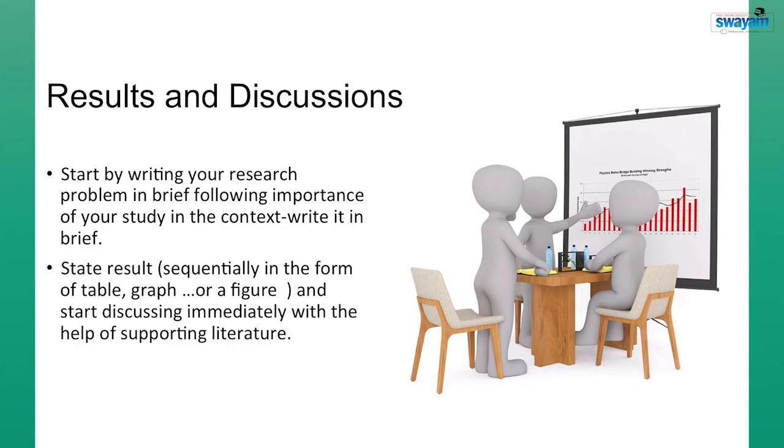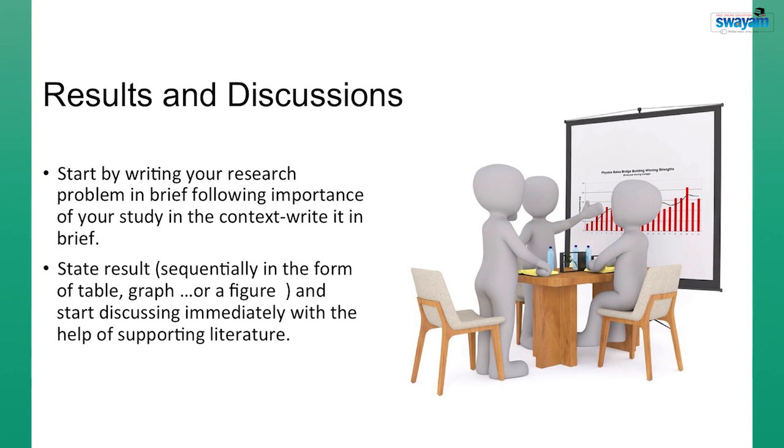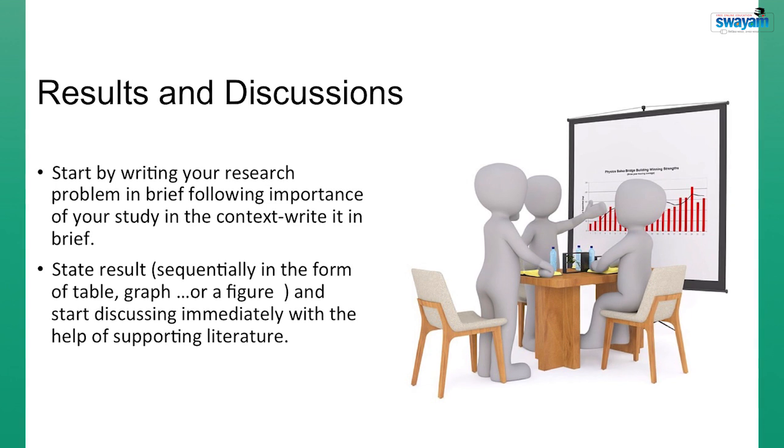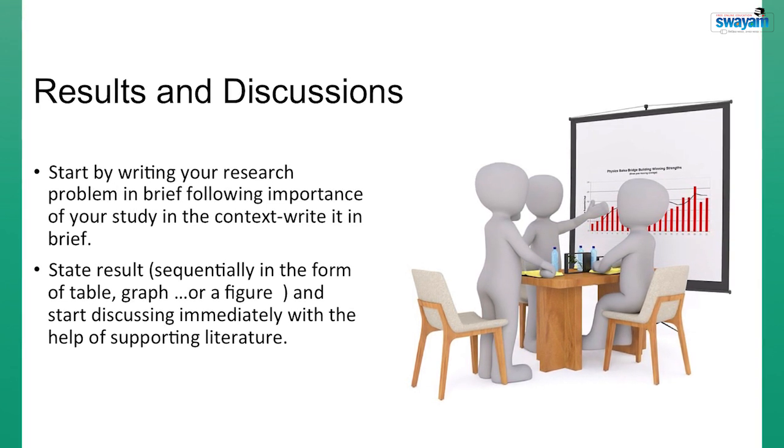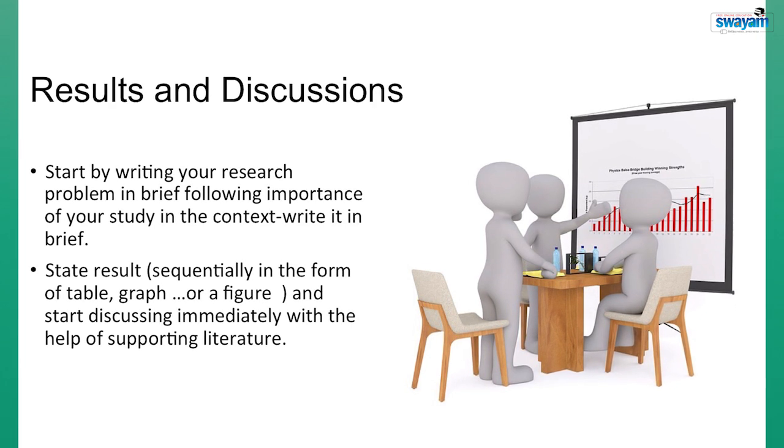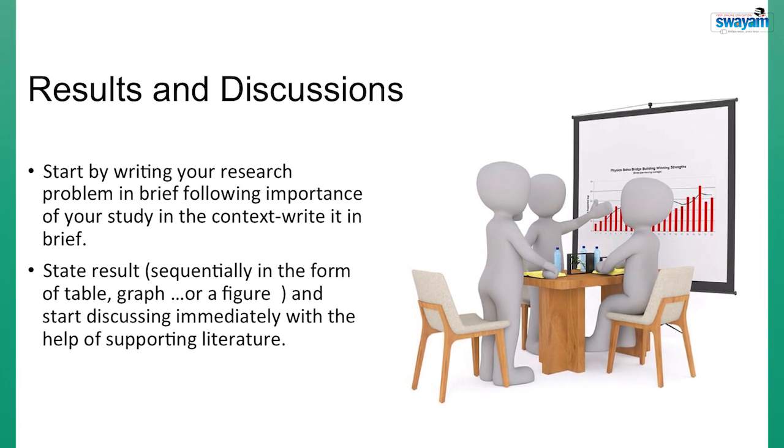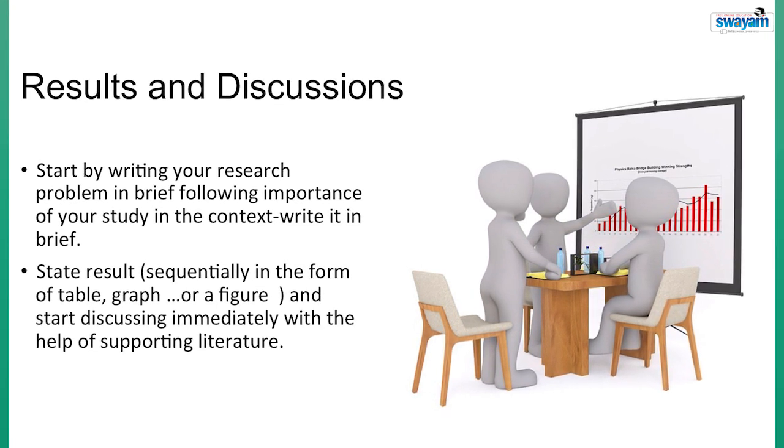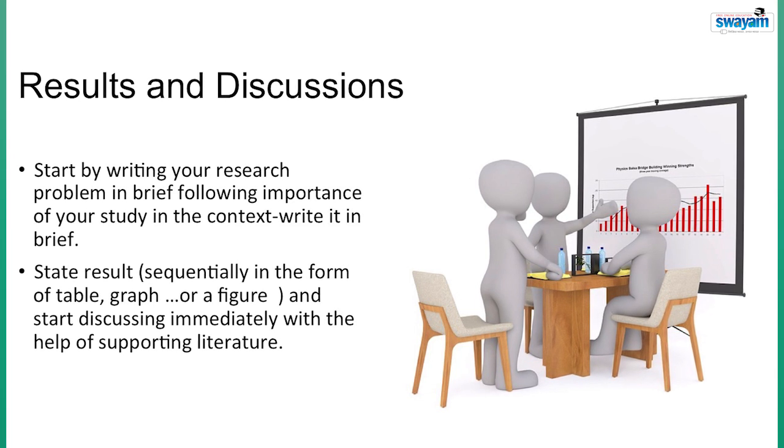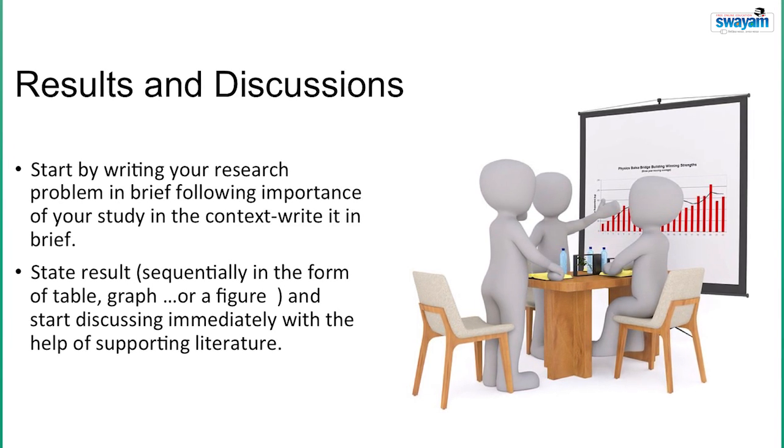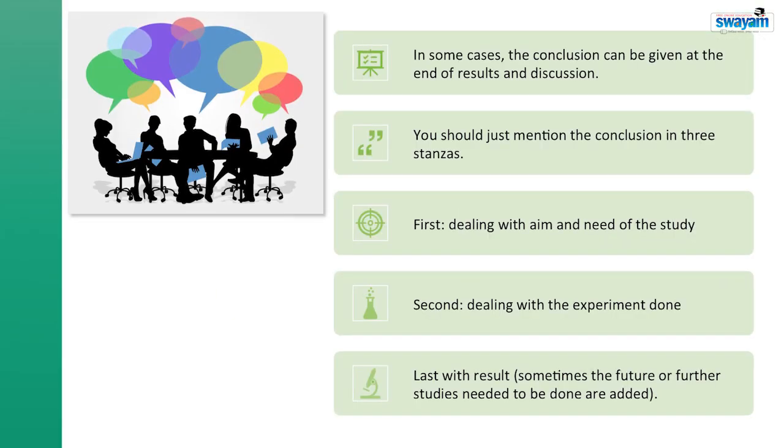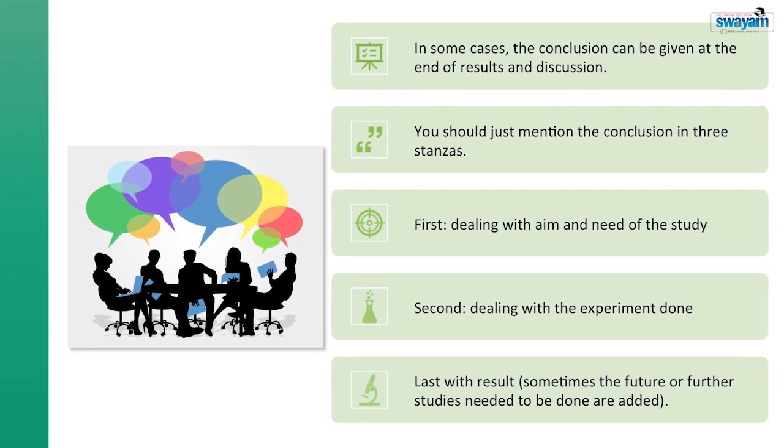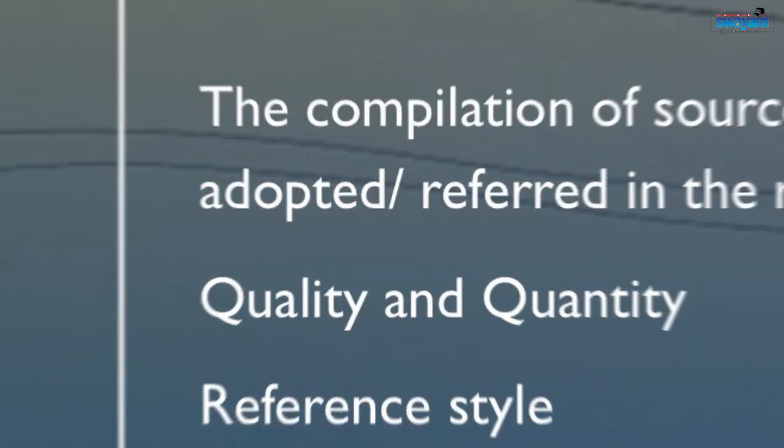Now, moving to the results and discussion if you are writing it together, what you have to do? You can start by writing your research problem in brief following importance of your study in context. Write it in brief just to bring rhythm again. First, you have to follow the same sequence which you have mentioned in the objectives, experimental point of view. Then state the results sequentially in the form of table, graph or a figure and start discussing immediately with the help of supporting literature. One thing you must take care: the location of table and figure must be appropriate so that one can easily connect them.